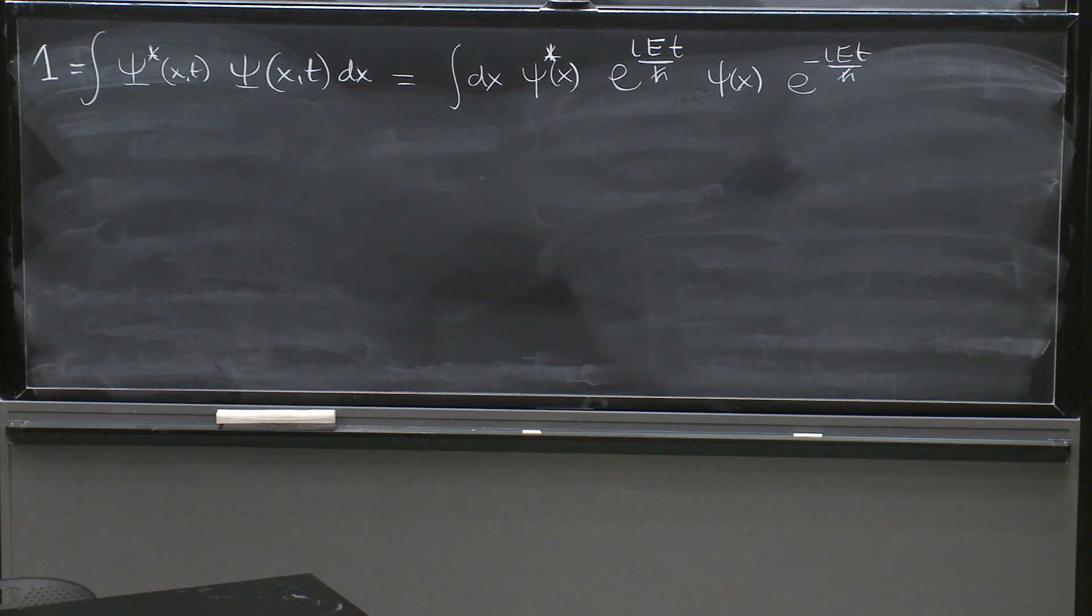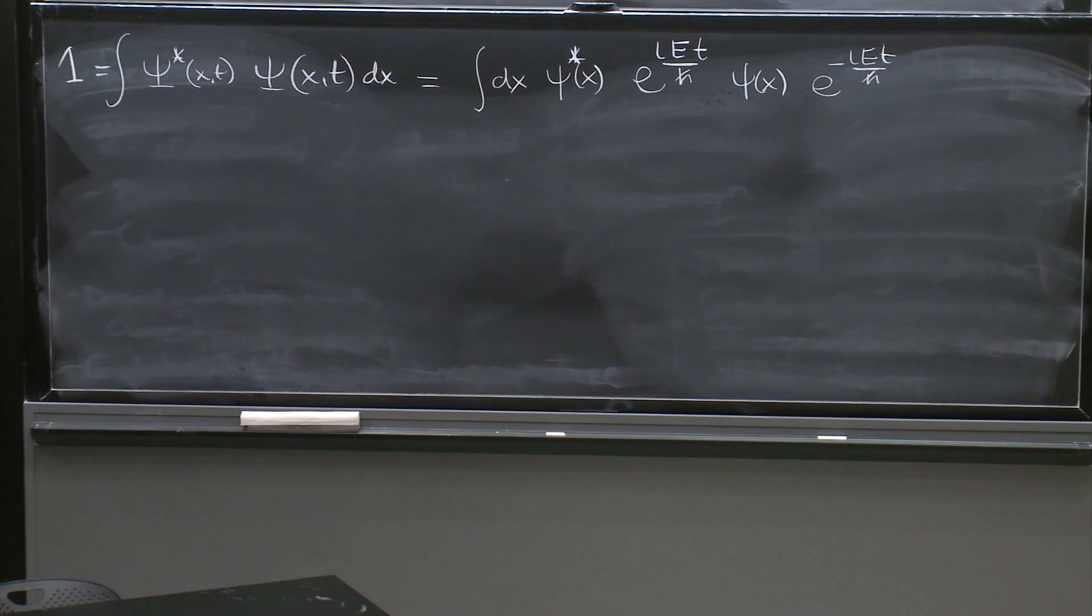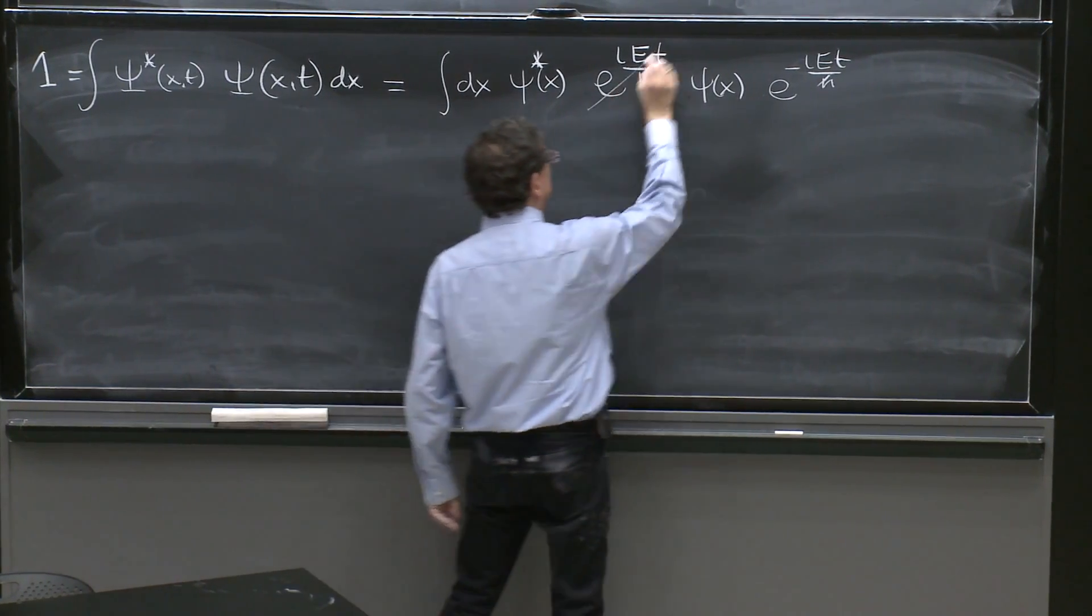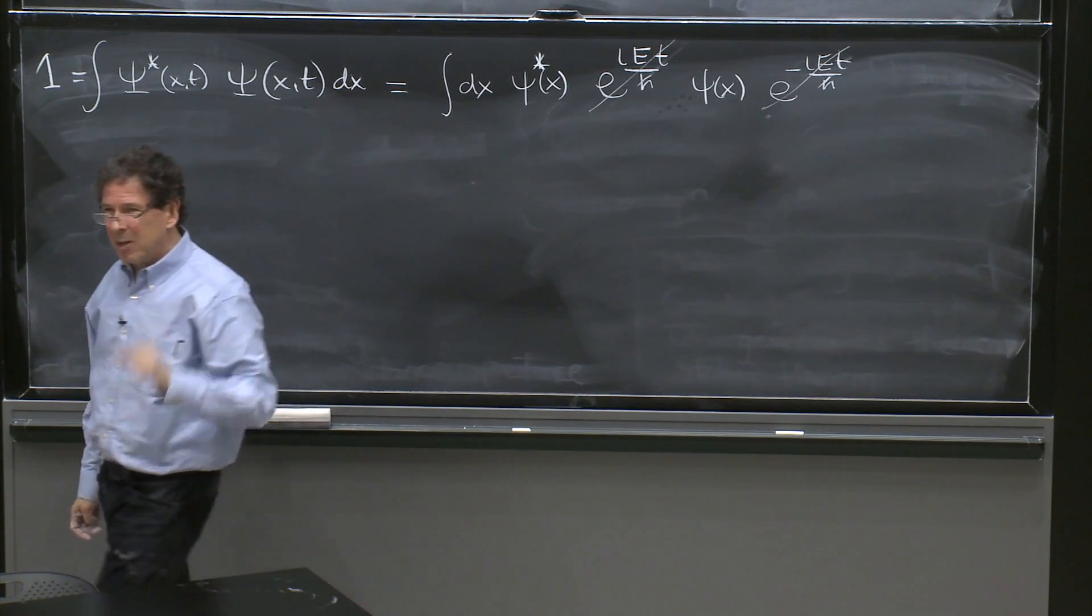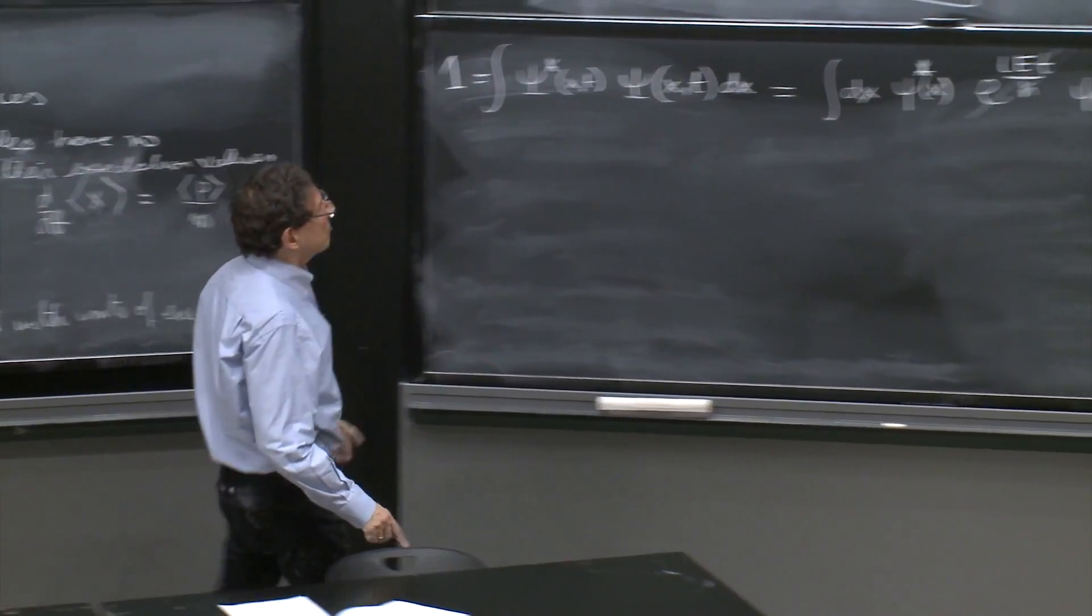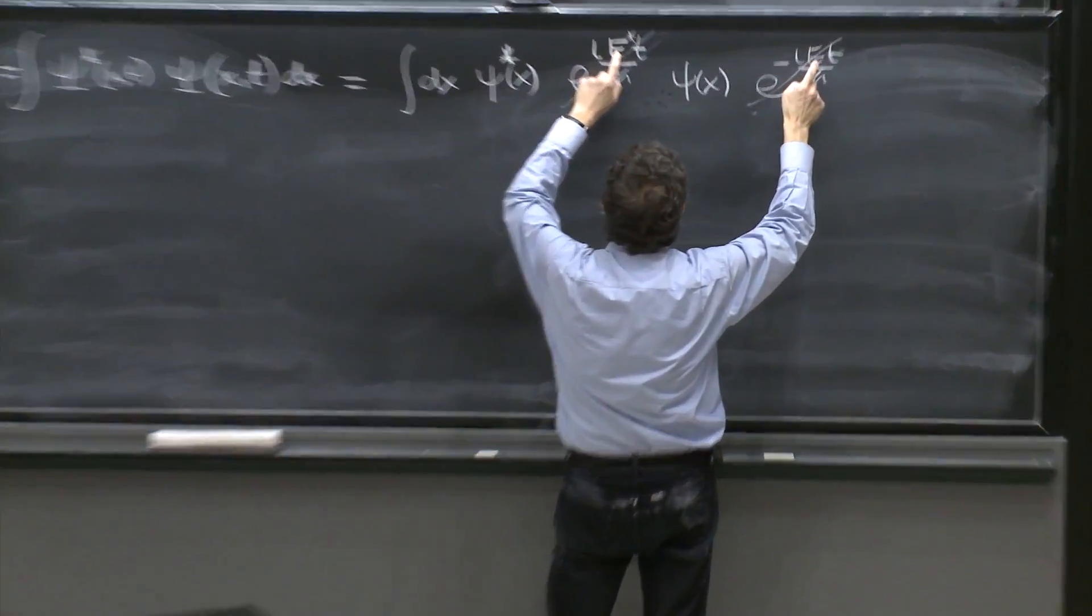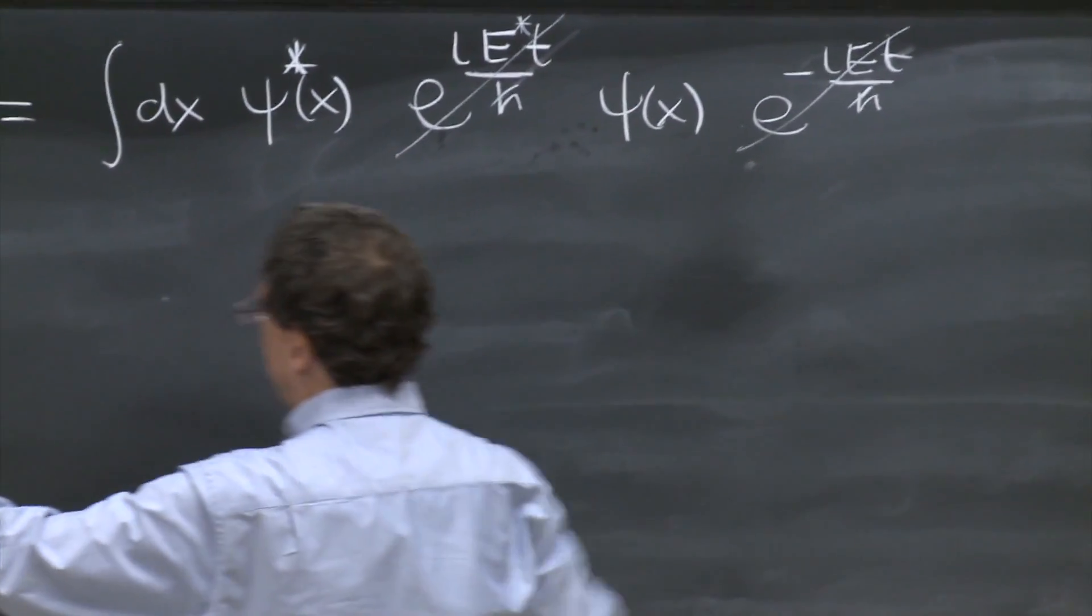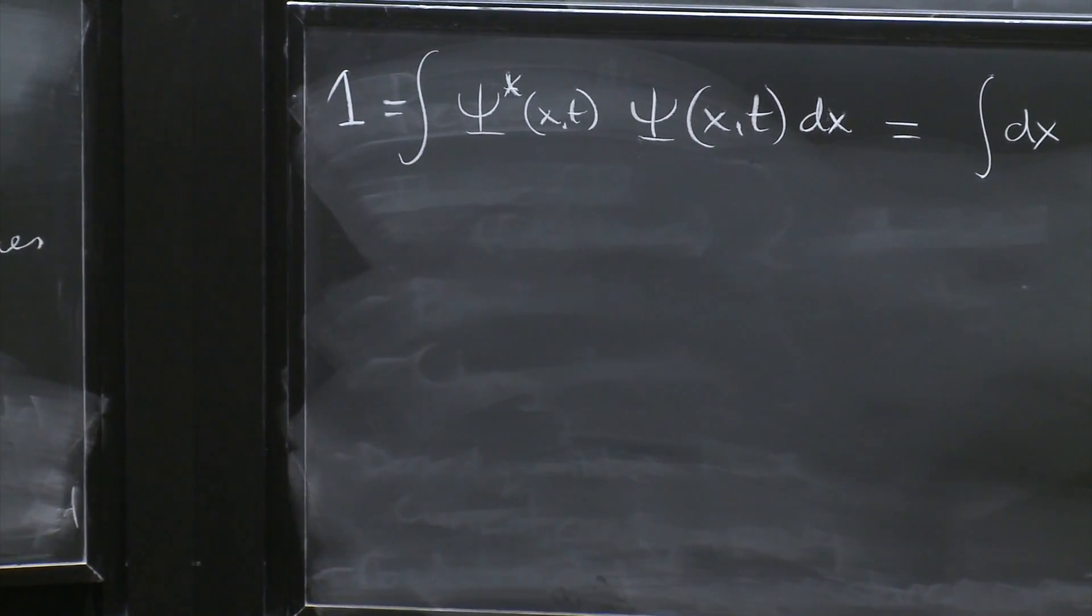And now, the good thing about this, you see this integral should be normalized to 1, to make sense. And it's a great thing that the time dependence drops out. And it would not have dropped out if the energy had not been real. If the energy was not real, I would have had to put here E star. And here, I would have had E star minus E of some function of time. And how can a function of time be equal to 1 would be a problem. We would not be able to normalize this wave function.